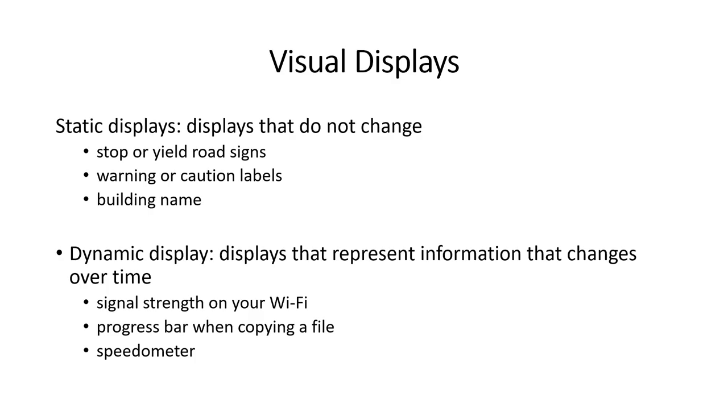There are two types of visual displays: static displays and dynamic displays. Static displays are those displays which do not change — the display itself is static, and the information it provides is also limited. By nature of being fixed, it provides limited information.